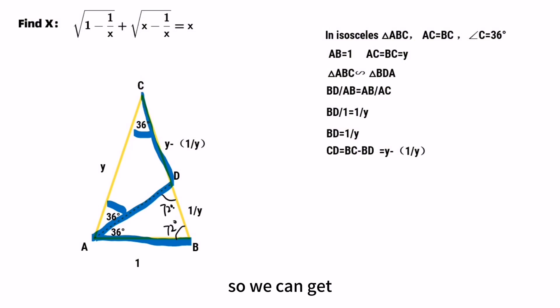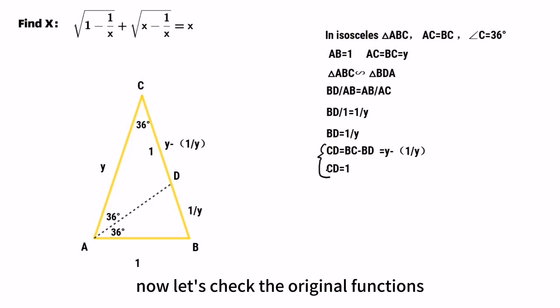So we can get CD equals AB equals 1. Now let's check the original function. The square root of X minus 1 over X has a similar term to Y minus 1 over Y. So now can we find a similar term for square root of 1 minus 1 over X.